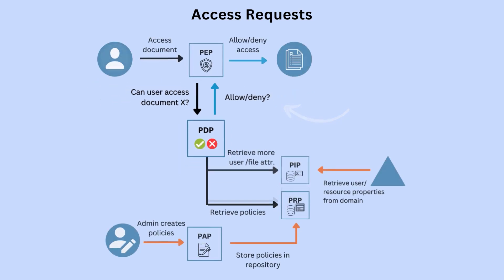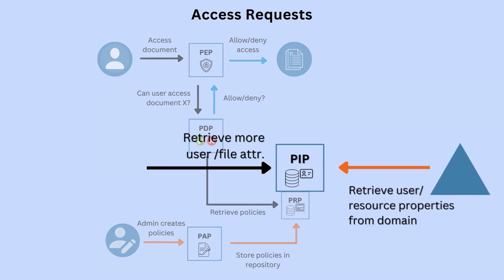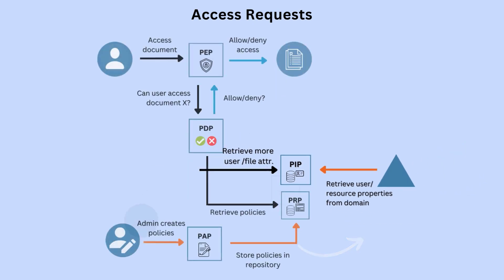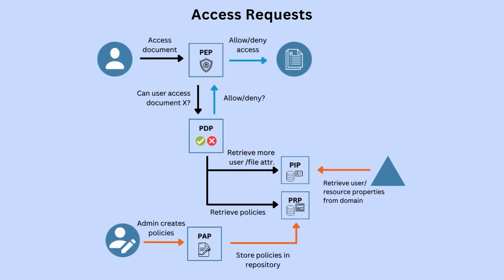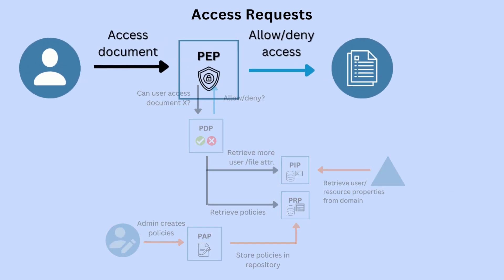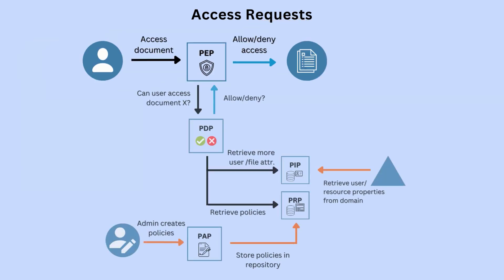The PDP uses a policy information point (PIP) to retrieve additional information such as user attributes from external data sources, which can be used in the decision-making process. Once the PDP has made a decision, it sends that authorization decision to a policy enforcement point (PEP), which enforces the decision by either allowing or denying access to the requested resource.